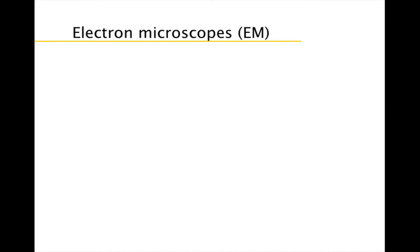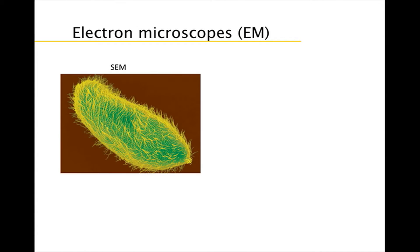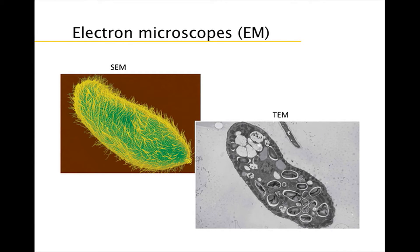The electron microscope has a much greater resolution than the light microscope. The higher resolution has allowed biologists to explore the complex internal anatomy of a cell. One example is a scanning electron microscope, which is used to study the detailed architecture of cell surfaces. The SEM uses an electron beam to scan the surface of a cell or group of cells. Another example is a transmission electron microscope, which is used to study the details of internal cell structure.